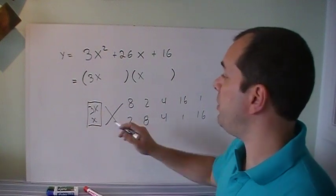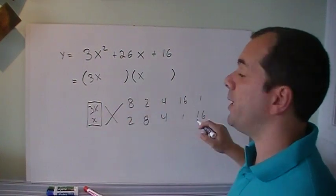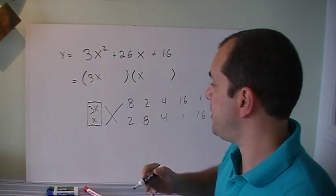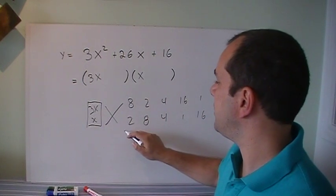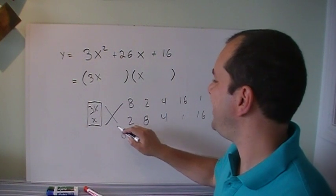So let's start cross multiplication. Let's check for common factor. Well, 3 does not have common factor, and 1 doesn't have common factor, so I can't get rid of any of these cases. So let's check. That's 6. 6 and 8.